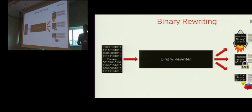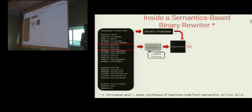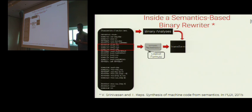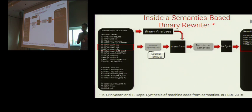What does a typical semantics-based binary rewriter look like? First, we convert the instructions in the binary into some semantic representation. A logical formula is an example of a semantic representation. Then, one can use various binary analyses to transform that semantic representation. For example, one can use information about constants and live registers and flags to optimize the semantic representation. Then, using a machine code synthesizer, one can synthesize an instruction sequence for the transformed semantics. MixSynth is the name of the state-of-the-art machine code synthesizer.